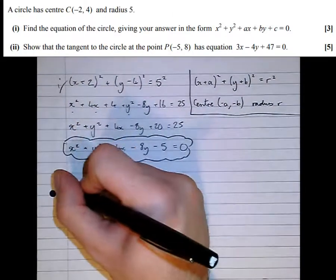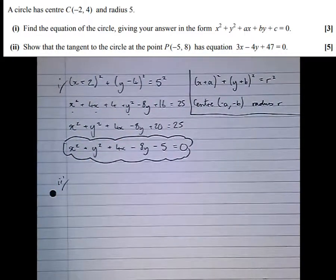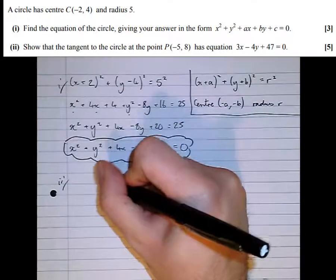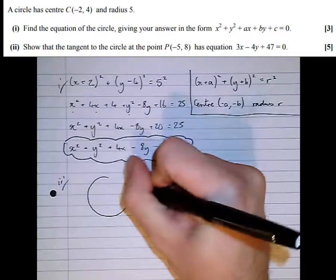Okay, part 2. Show that the tangent to the circle at the point (-5, 8) has that equation. So I'm working towards getting that answer there.